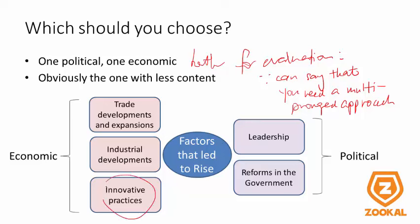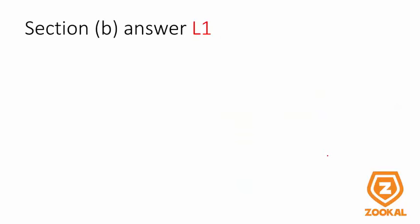The one with less content is innovative practices — just double entry bookkeeping and general banking, very short. Whereas the other two factors have a lot of subtopics under them. For political, choose leadership — just give examples of a few leaders and link it to what you have learned in chapter 2 on understanding governance: good leaders, good foresight, making sound policies, etc. Very straightforward.